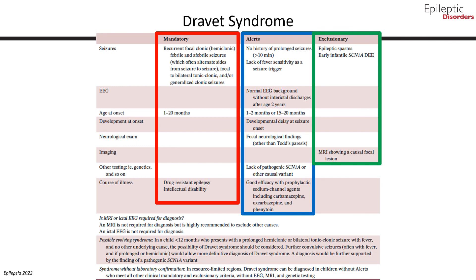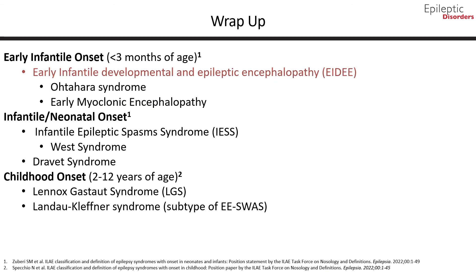To wrap up, in this module we have talked about early infantile developmental and epileptic encephalopathy, infantile epileptic spasms syndrome, West syndrome, and Dravet syndrome. In part 2 of this series, we will talk about childhood onset epileptic encephalopathies.